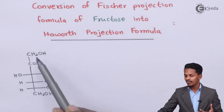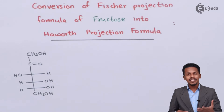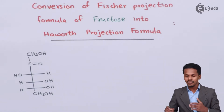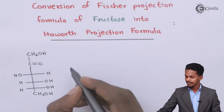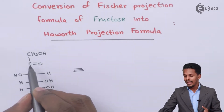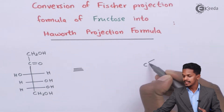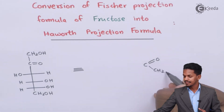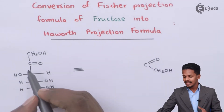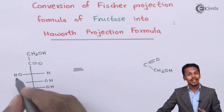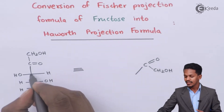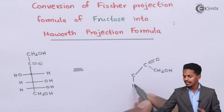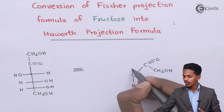This is the Fischer projection formula for fructose. Now let me explain what happens if we convert it into the Haworth projection formula. I would consider this carbonyl group as C double bond O to which CH2OH is attached. The other valency is satisfied with the next group. This carbon atom consists of hydrogen on the right side, so I am going to put the hydrogen at the lower side and OH on the upper side.